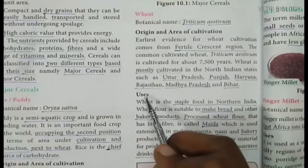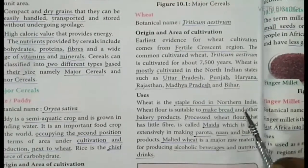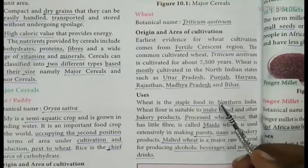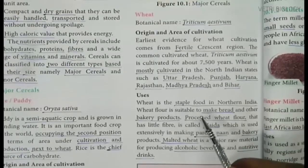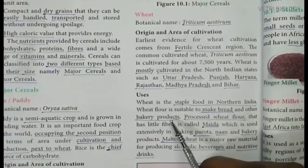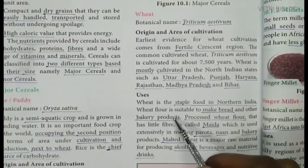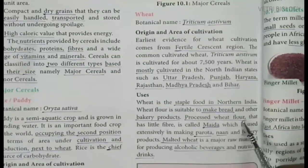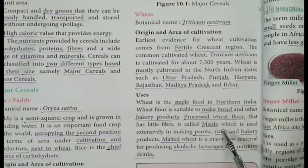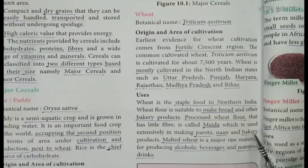Wheat is a staple food in Northern India. Wheat flour is suitable to make bread and other bakery products such as cake, rusk, biscuit and cookies. Processed wheat flour that has little fiber is called Maida, which is used extensively in making parota, naan and bakery products.